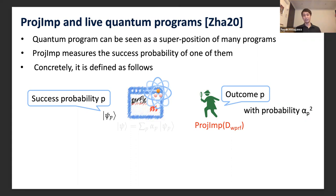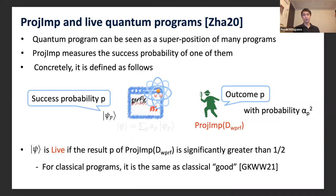As the name suggests, projective implementation is projective: if we apply projective implementation for D_wprf again, we obtain outcome p with probability one. Using this projective implementation, we define live quantum programs. We say a quantum program ψ is a live quantum program if the result p of projective implementation for D_wprf is significantly greater than 1/2. Once confirmed live, the post-measurement state surely has high success probability. For classical programs, this notion coincides with the classical notion of good programs used by Goyal et al. in the context of traceable PRFs.